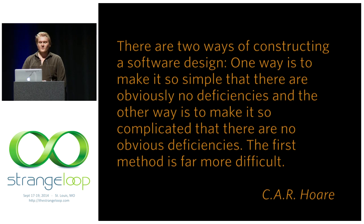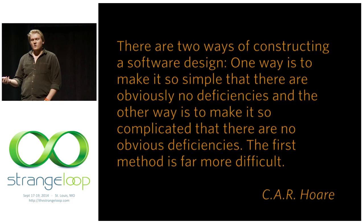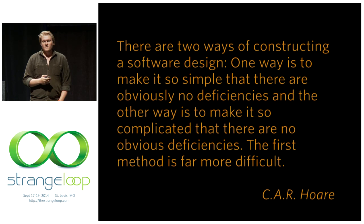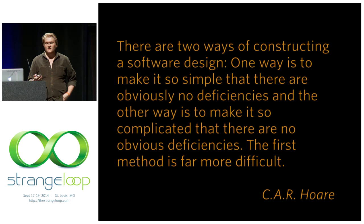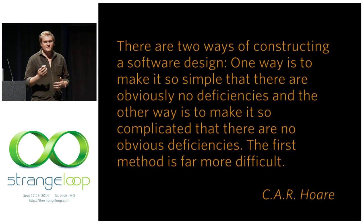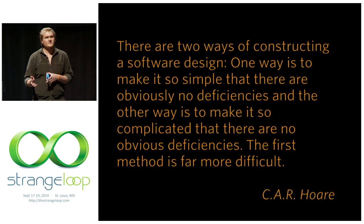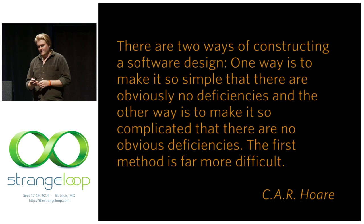I want to start off with this quote by Tony Hoare: there are two ways of constructing a software design. One is to make it so simple that there are no deficiencies, and the other way is to make it so complicated that there are no obvious deficiencies. The first method is far more difficult. This touches on something Rich Hickey talked about — there's a significant difference between simple and easy. Easy means something is near at hand or accessible, while simple implies a lack of complexity. Ease does not necessarily imply simplicity; in fact, without a lot of work, ease can often lead to something very complex.